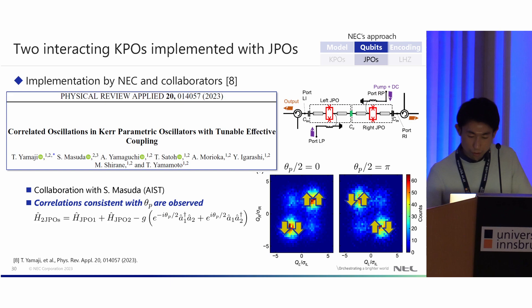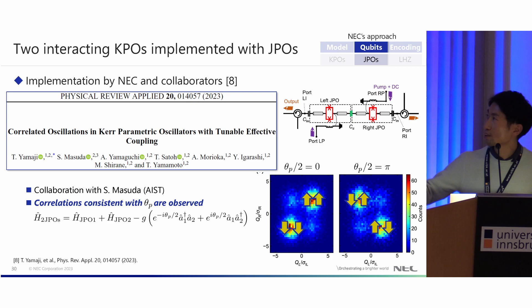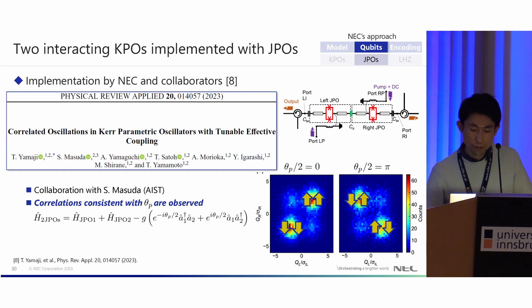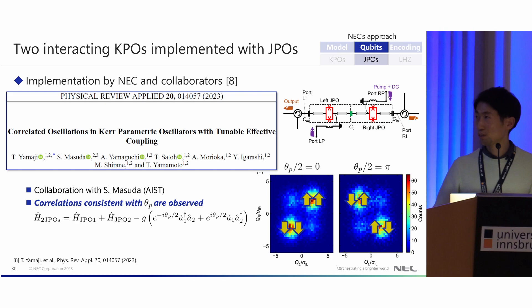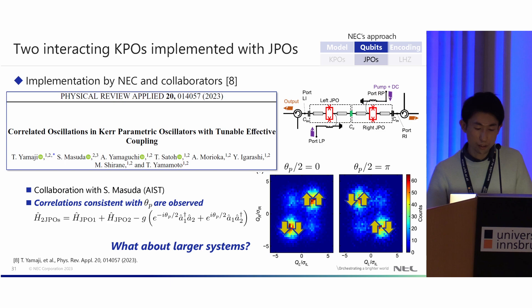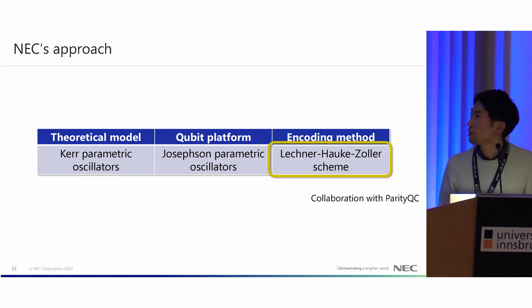This Hamiltonian corresponds to interacting KPOs, and these two interacting KPOs were also implemented by NEC and collaborators, reported in a published paper. We can obtain correlations consistent with theta_p. This figure shows the probability of the obtained state at the final state of annealing: for theta_p over 2 equal to zero, we obtain up-up or down-down states — positive correlation. When theta_p over 2 equals pi, we obtain anti-correlation — up-down or down-up. So correlations consistent with theta_p are observed in experiments.